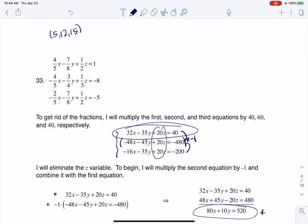And if I had stored that, and if I did 4 fifths times 5 minus 7 eighths times 12 plus 1 half times 15, if that was equal to 1, great. And I could repeat that down here and repeat it down here. And if I get equality on all three of my original equations, then I know I have the right answer.